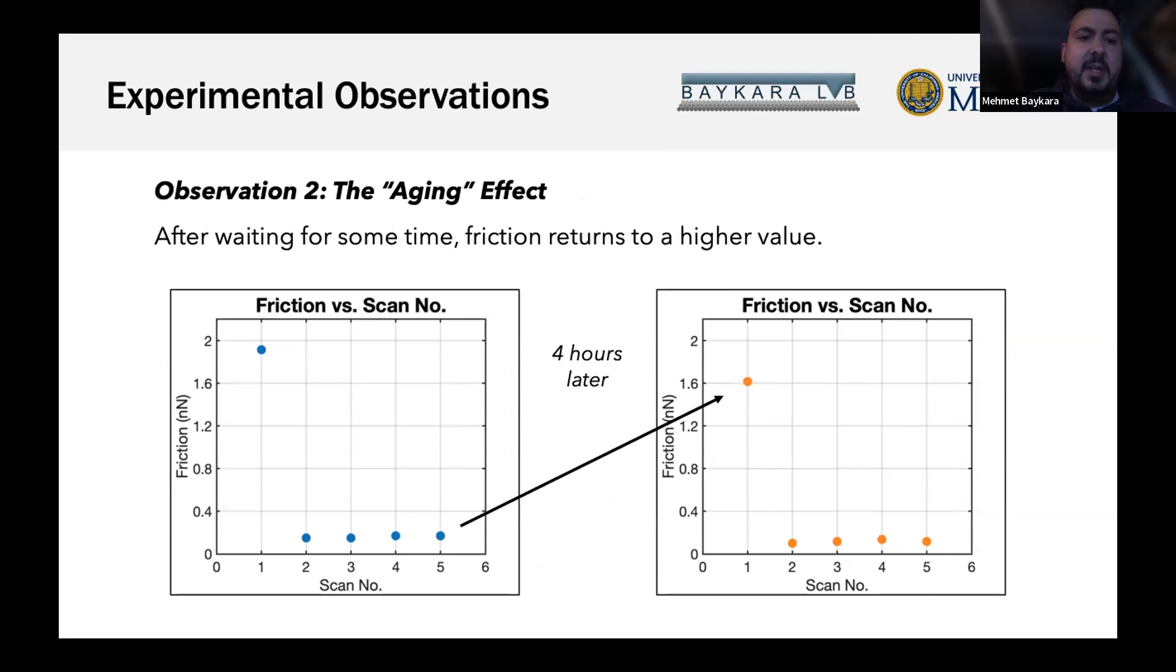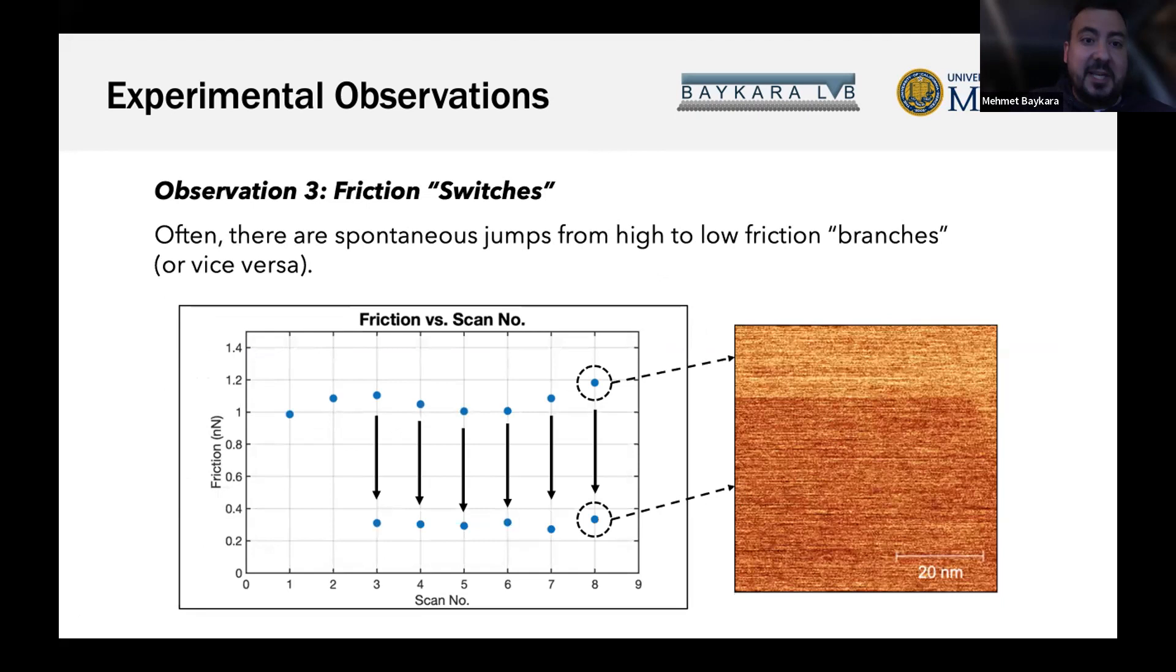The second effect is the aging effect. You slide your island doing five experiments, then go have an extended lunch for four hours. When you come back and measure the same island again, you again see that the initial friction value is much higher than subsequent ones. That initial high value from the first experiment is back after waiting, so we call this the aging effect.